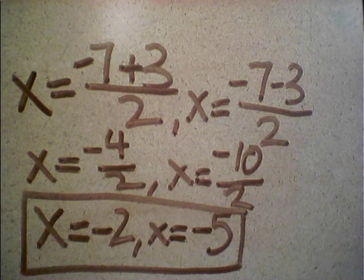Once we do that, we get two separate answers of x equals negative 4 over 2, x equals negative 10 over 2. The final answer: x equals negative 2 and x equals negative 5. Thanks for watching this presentation.